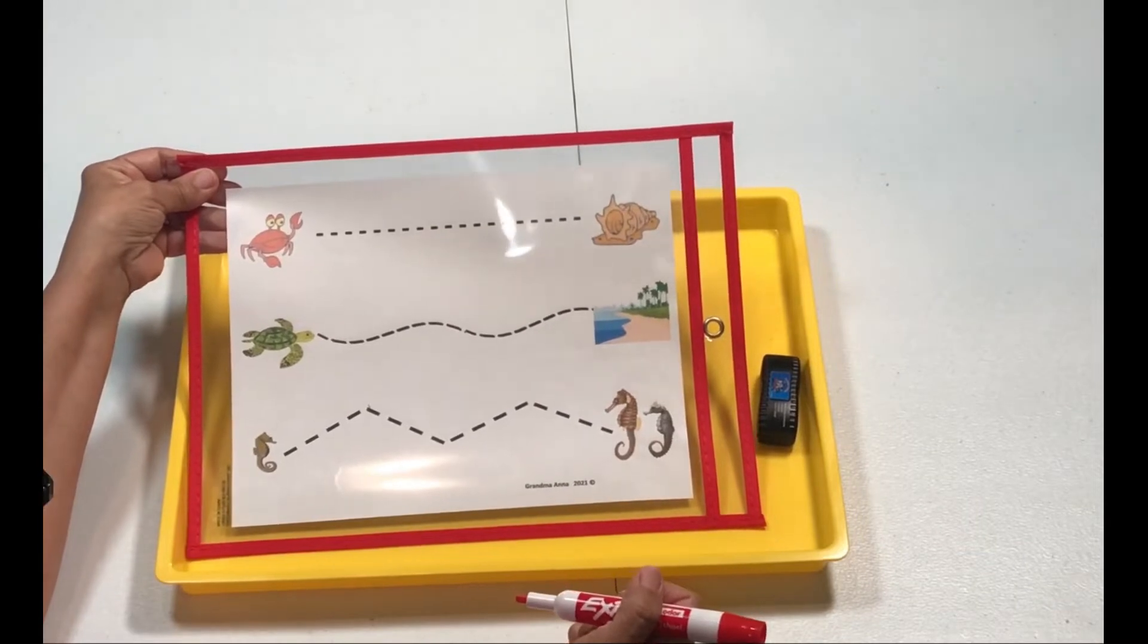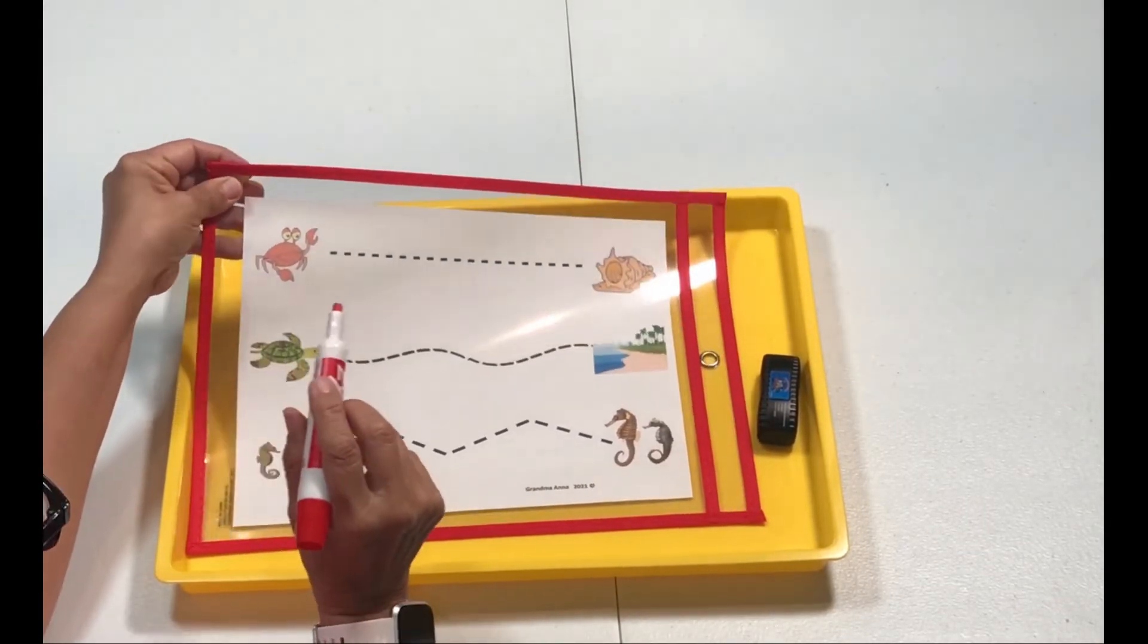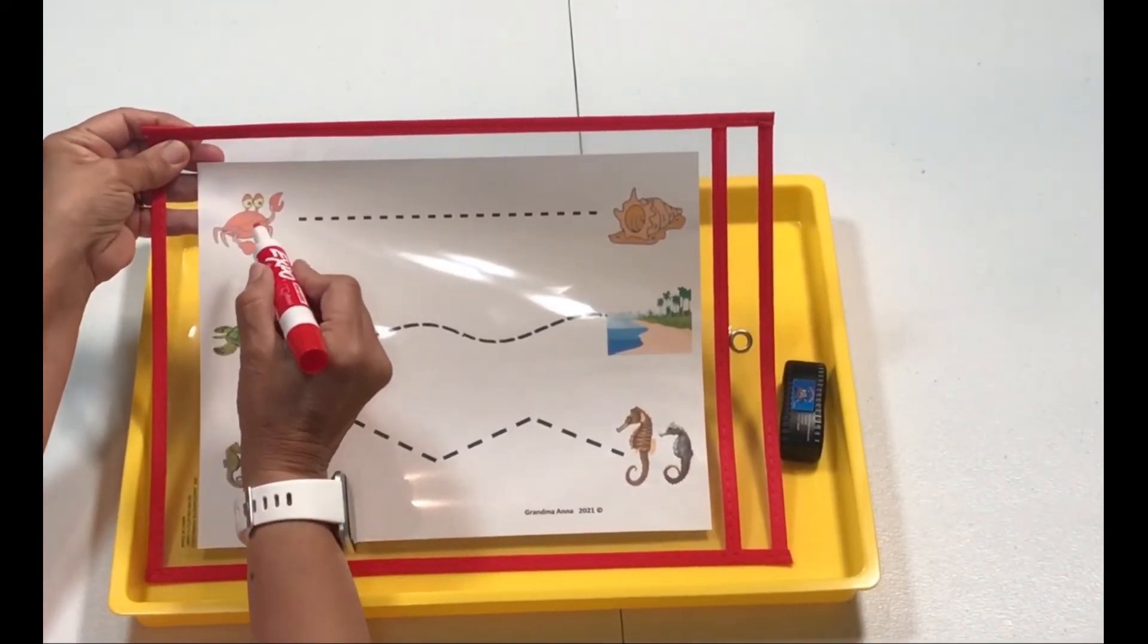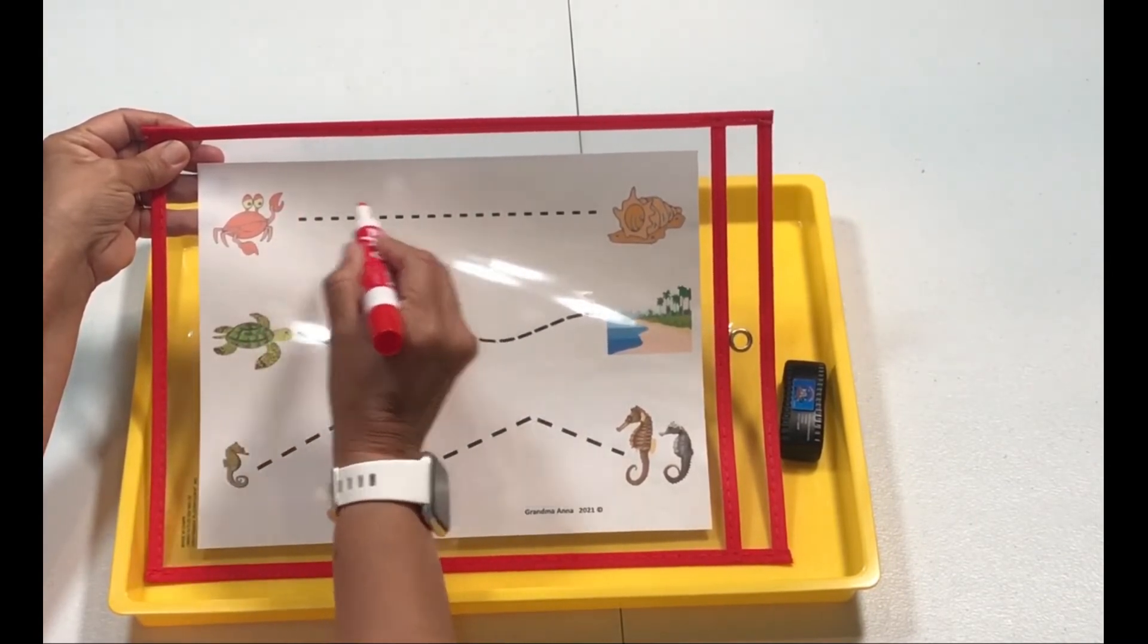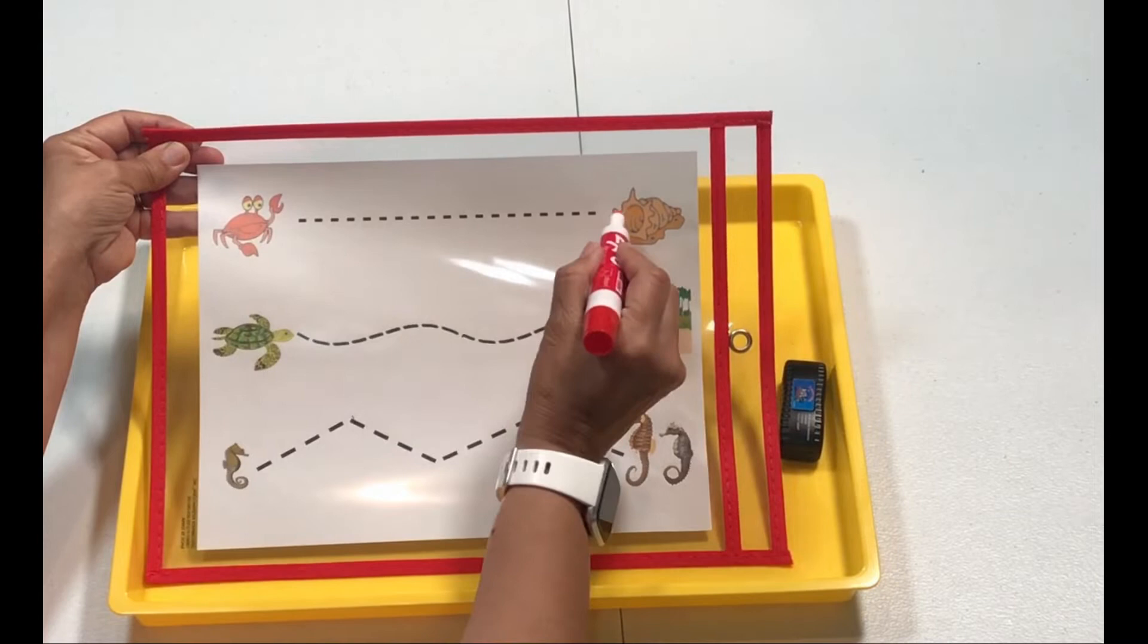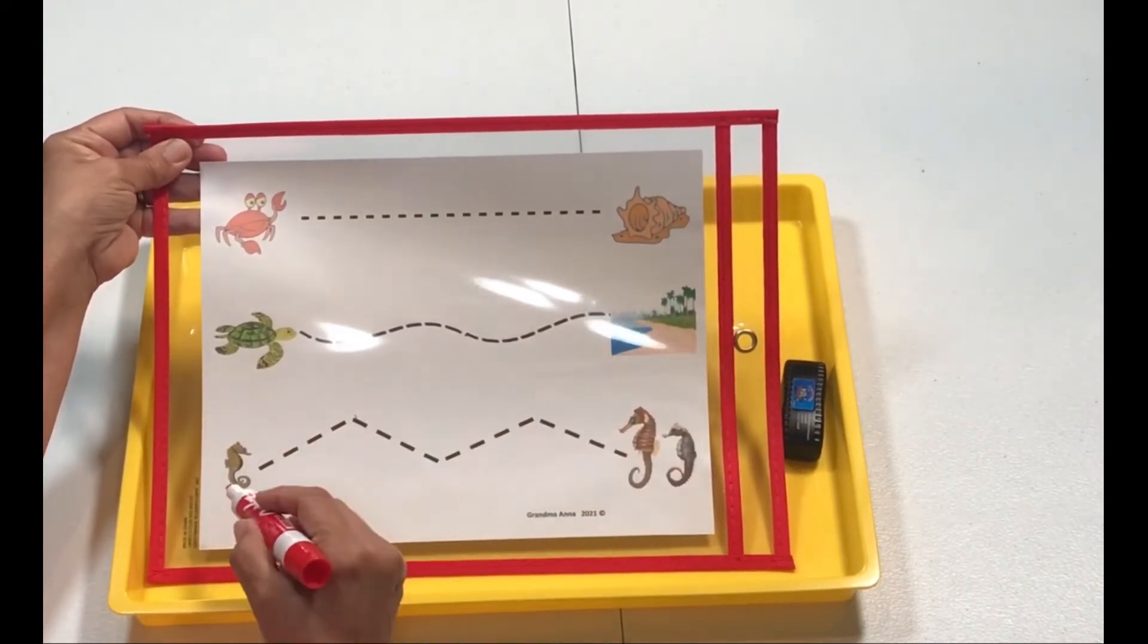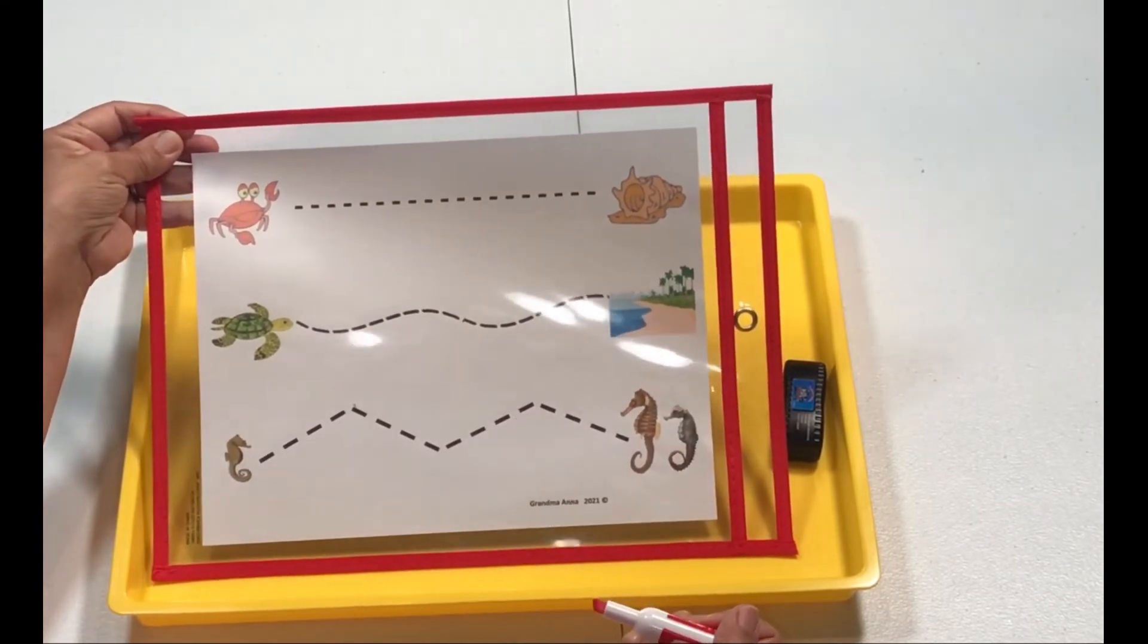This next activity is a tracing activity. I went ahead and put this printable together. We're just going to trace the line. We're going to have the crab come to the shell. And we're going to do the same over here and down here. This is a free printable and I'll link it below.